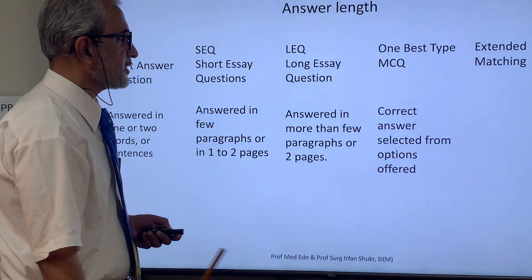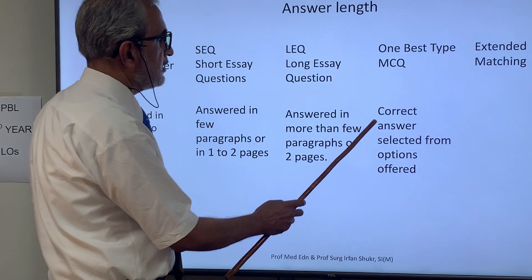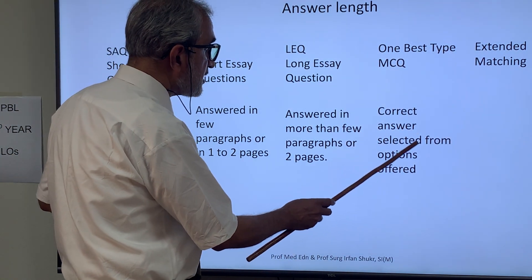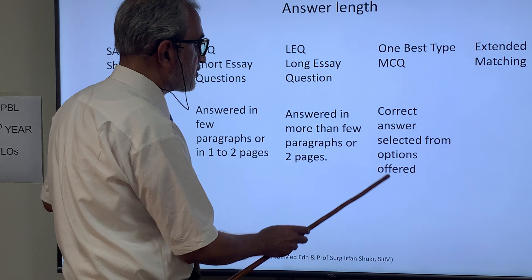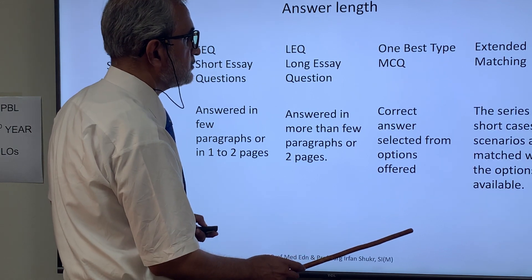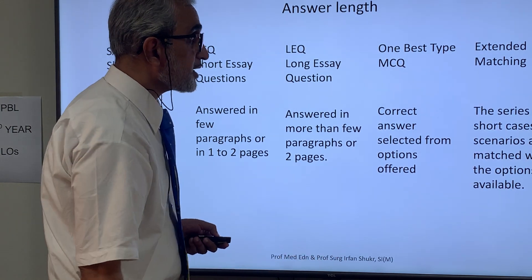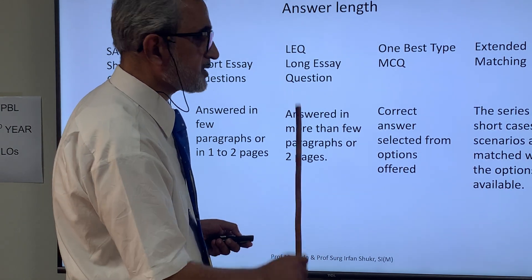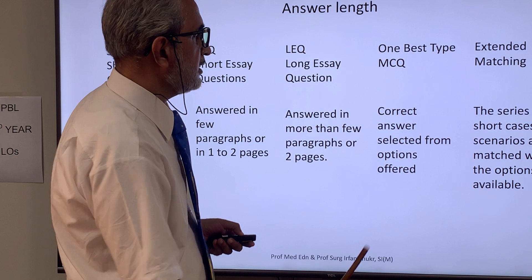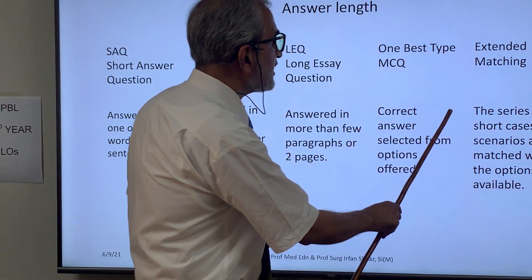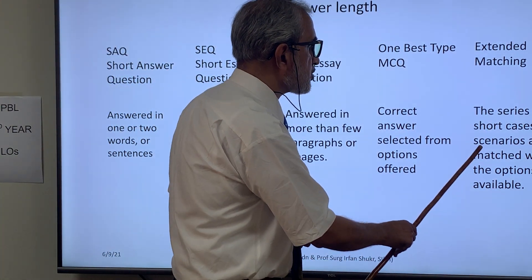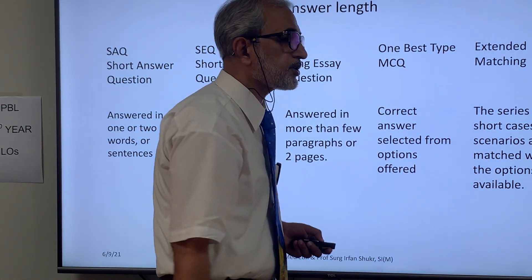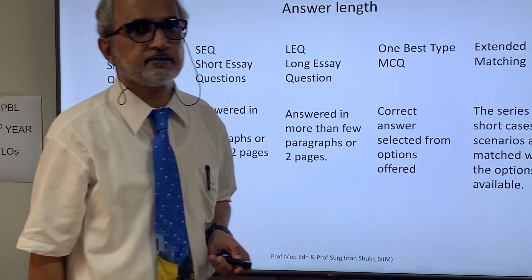In a one-best MCQ, the correct answer is selected from options offered. In extended matching, the answer is also selected, but a series of short cases or scenarios are matched with the available options.